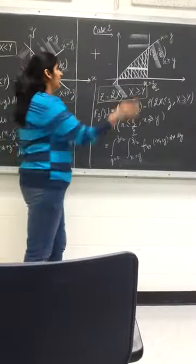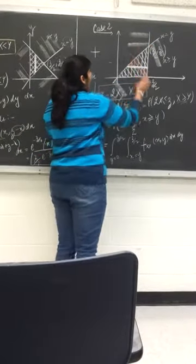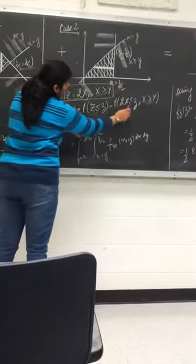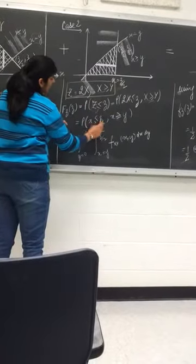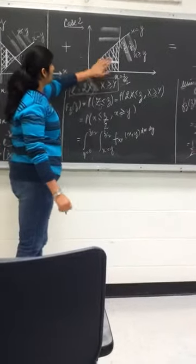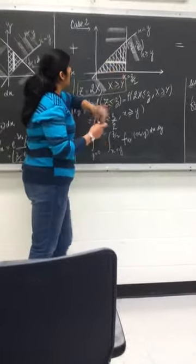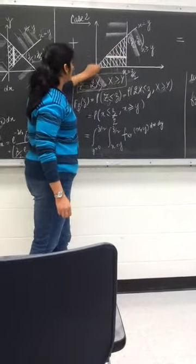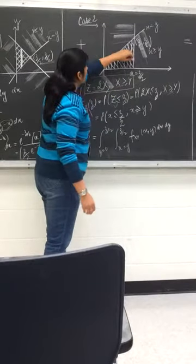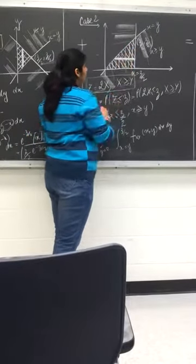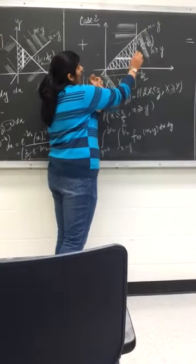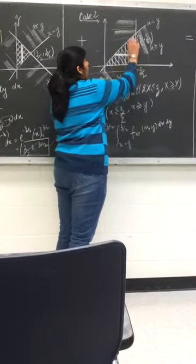We plot the graph again. We have the x equals y line and the x equals z/2 line. From the condition 2x less than or equal to z, we get x less than or equal to z/2, and x is greater than or equal to y. The region where x is greater than or equal to y is below the x equals y line, and we want x less than or equal to z/2. The intersection of these regions is a triangle. The limits are: x goes from y to z/2, and y goes from 0 to z/2.